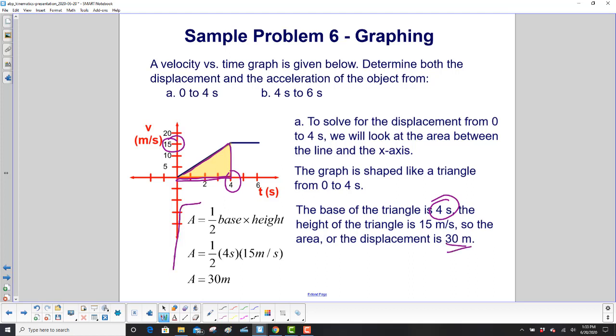Now, where did that come from? Here's the equation for the area of a triangle, one half base times height. Here's the base. Here's the height. And look how the units work out. We have seconds times meters per second. Seconds cancel and we're left with meters. So the area is 30 meters. That is our displacement.